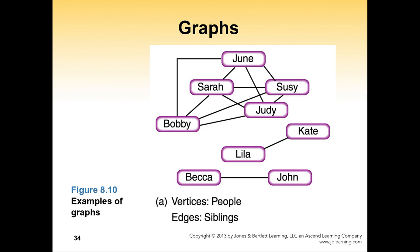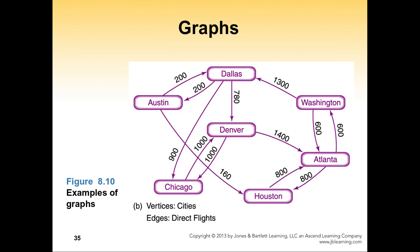A directed graph uses vertices as cities and edges as flights. You can go from Dallas to Chicago, but you cannot go directly back to Dallas. To return from Chicago to Dallas, you must go through Denver, then Atlanta, then Washington, then back to Dallas. So the direction of the edges is very important.